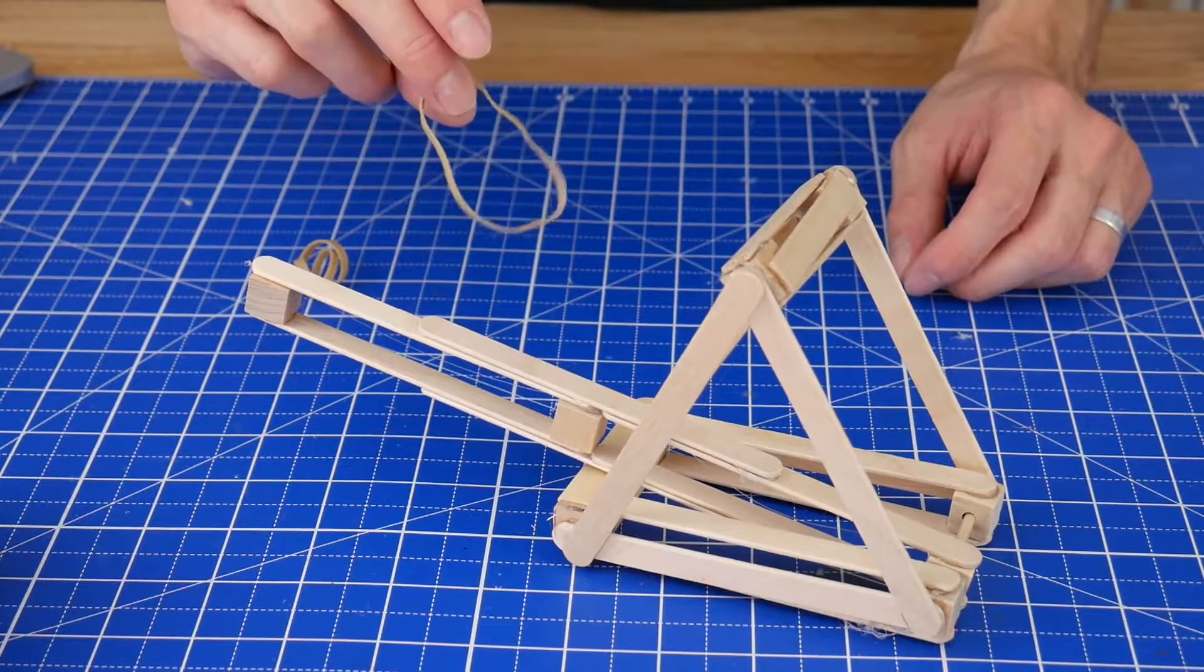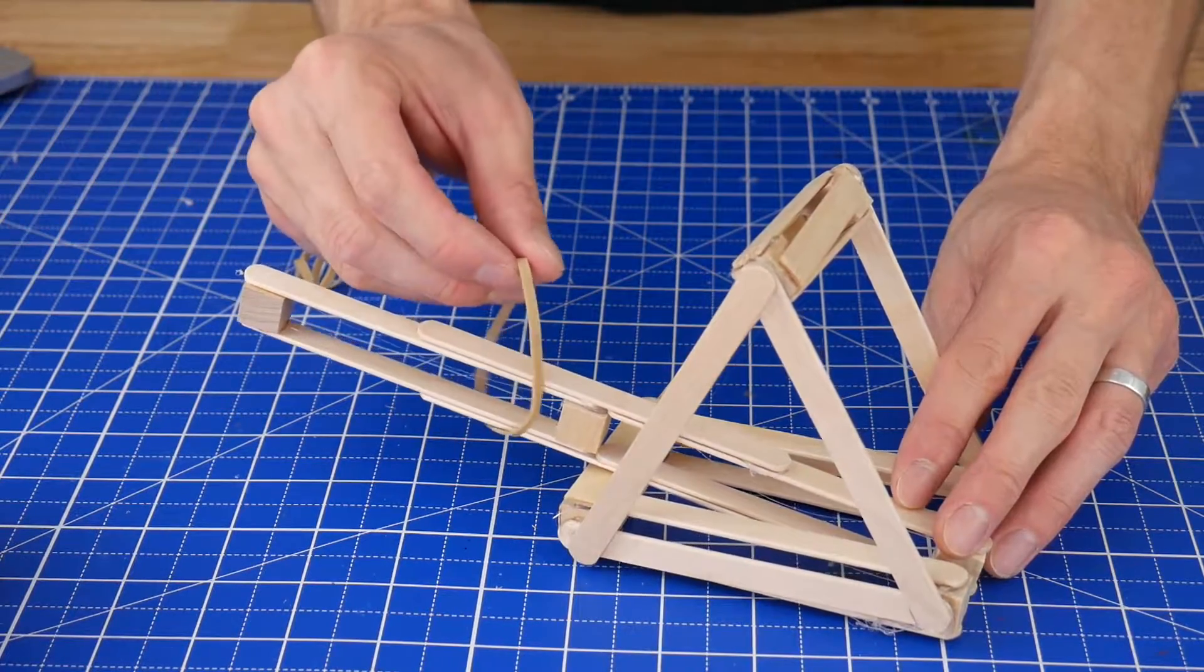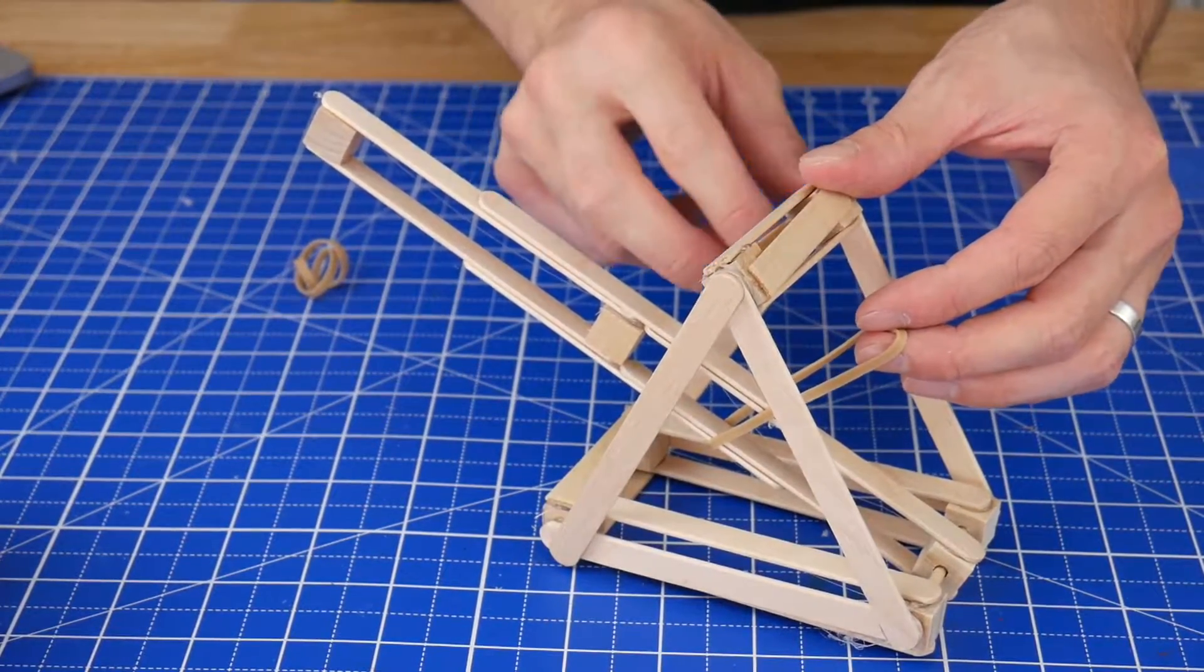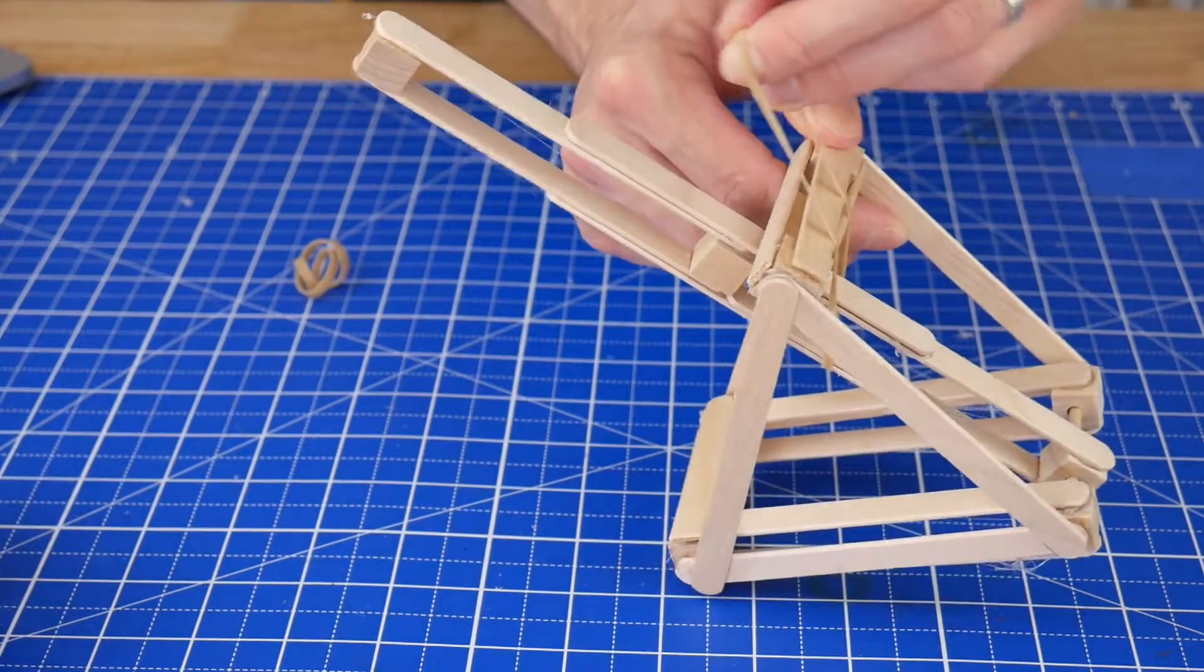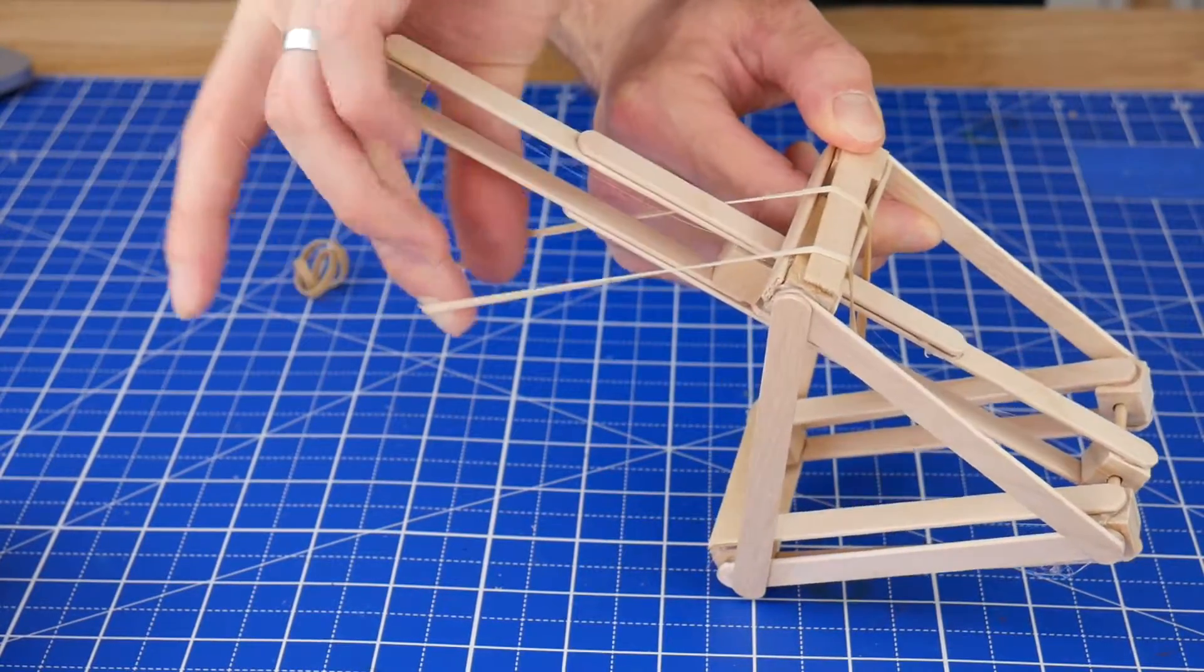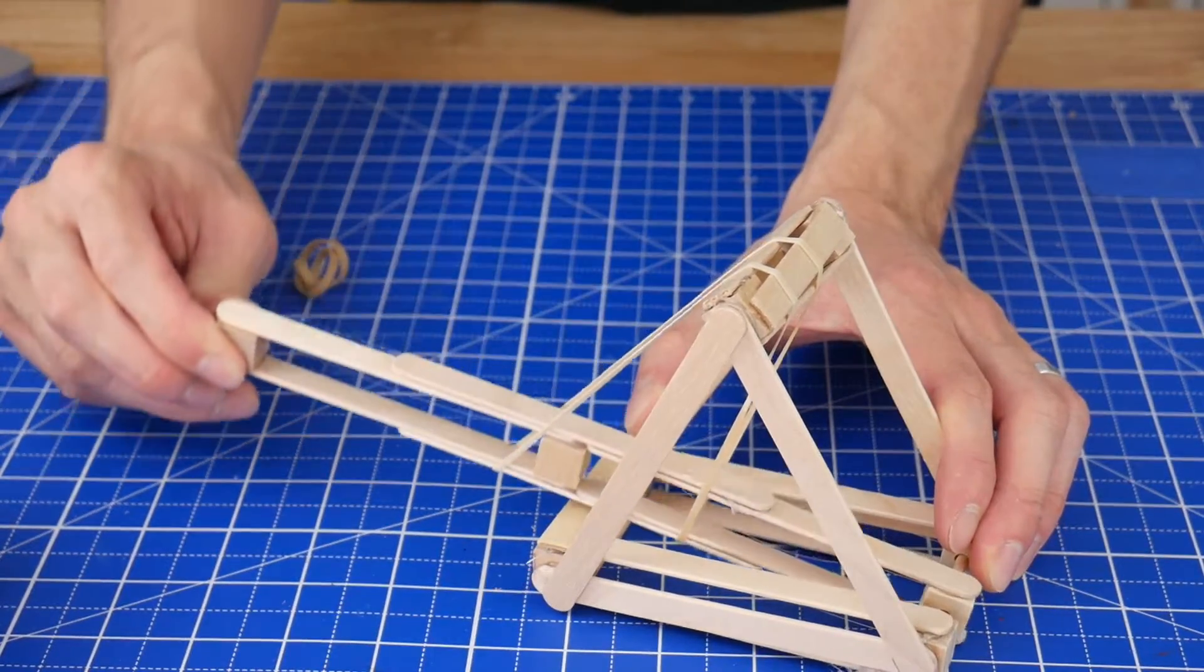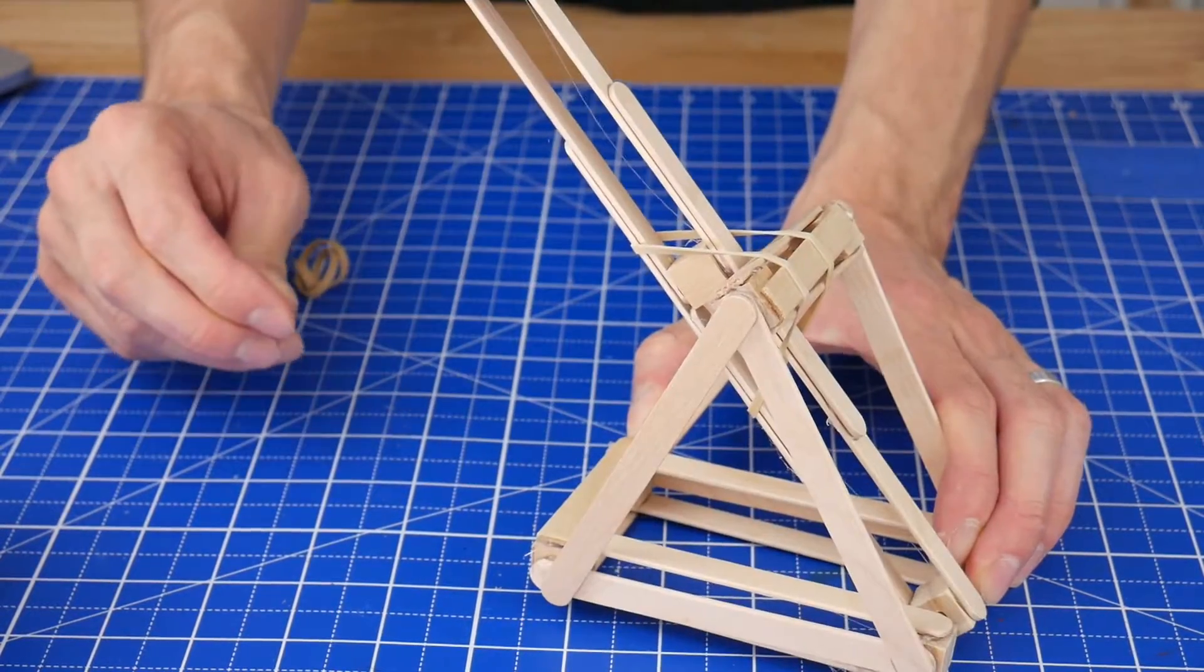Okay, next we're going to add the rubber bands. Loop it around the catapult arm, then pull it under this stop bar at the top, stretch it out, and loop it around the back over the catapult arm again. Now when the arm is pulled back, the rubber band gets stretched out, and when released, it'll snap the arm forward.